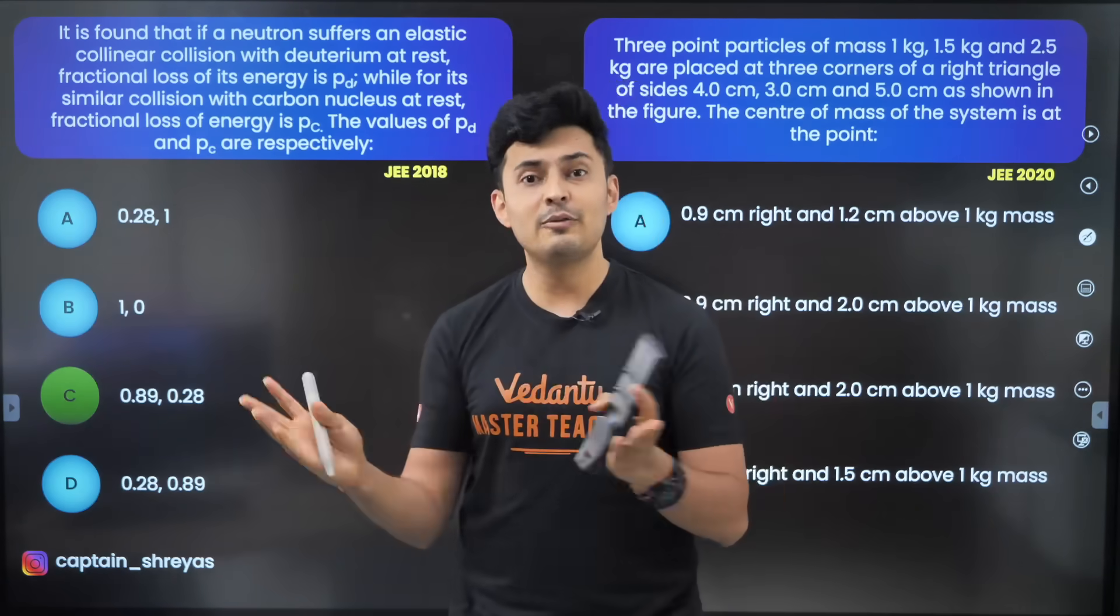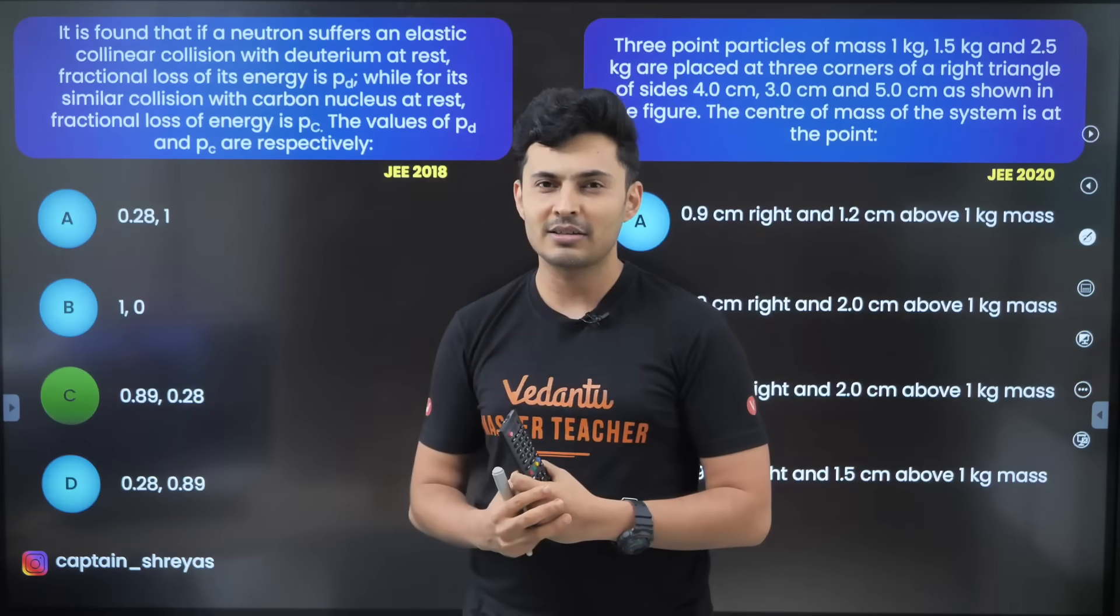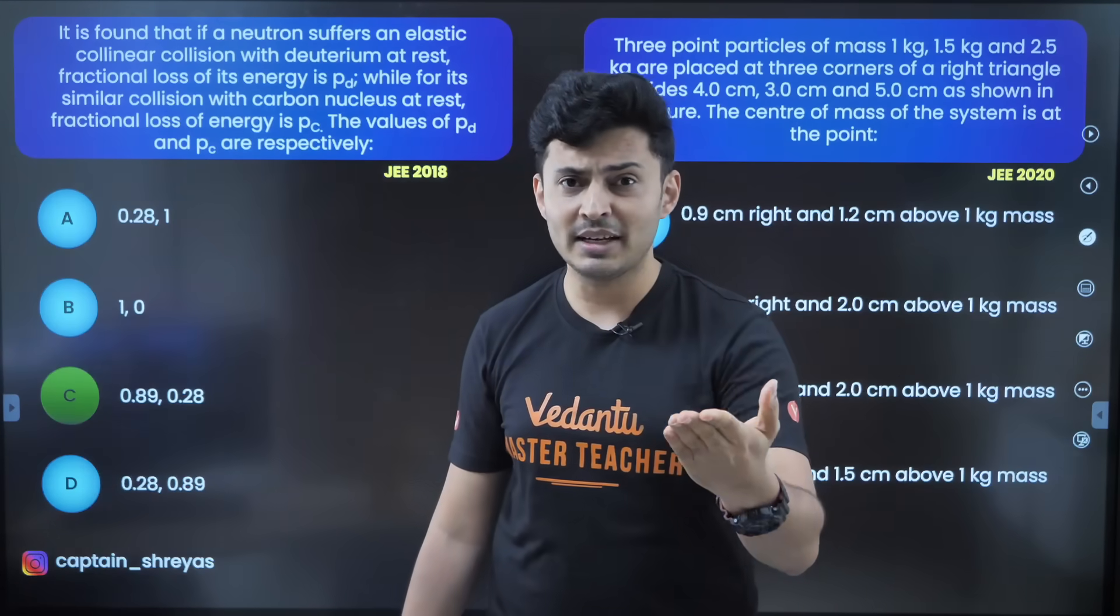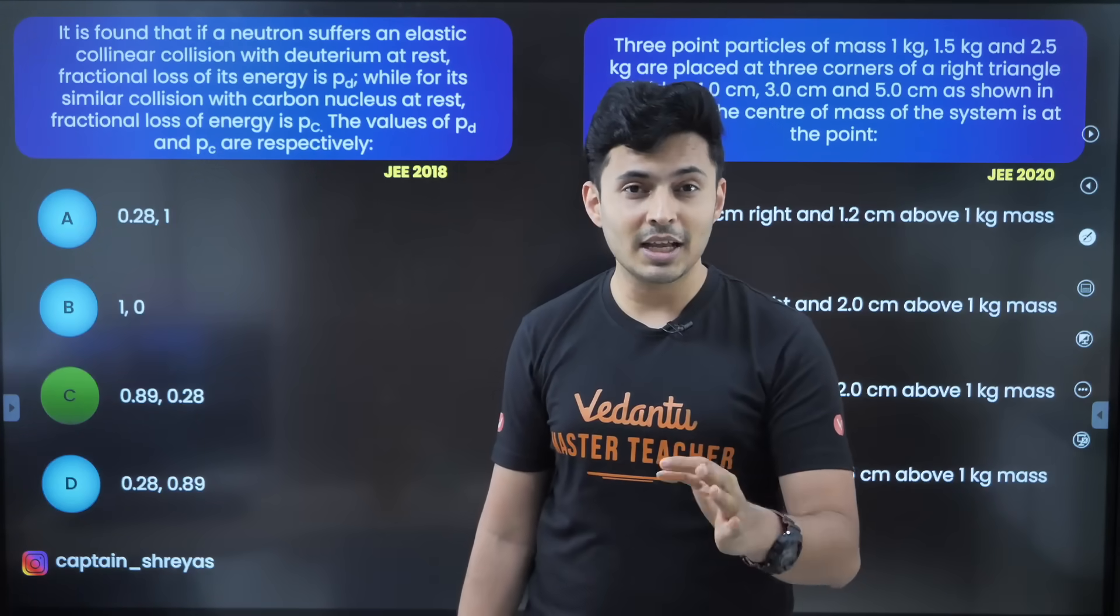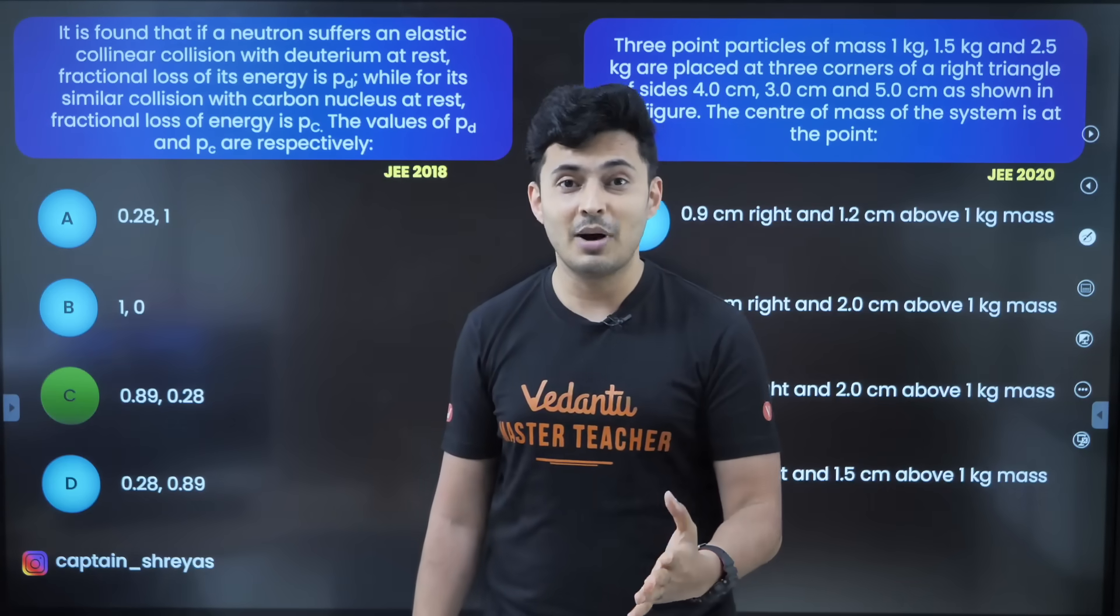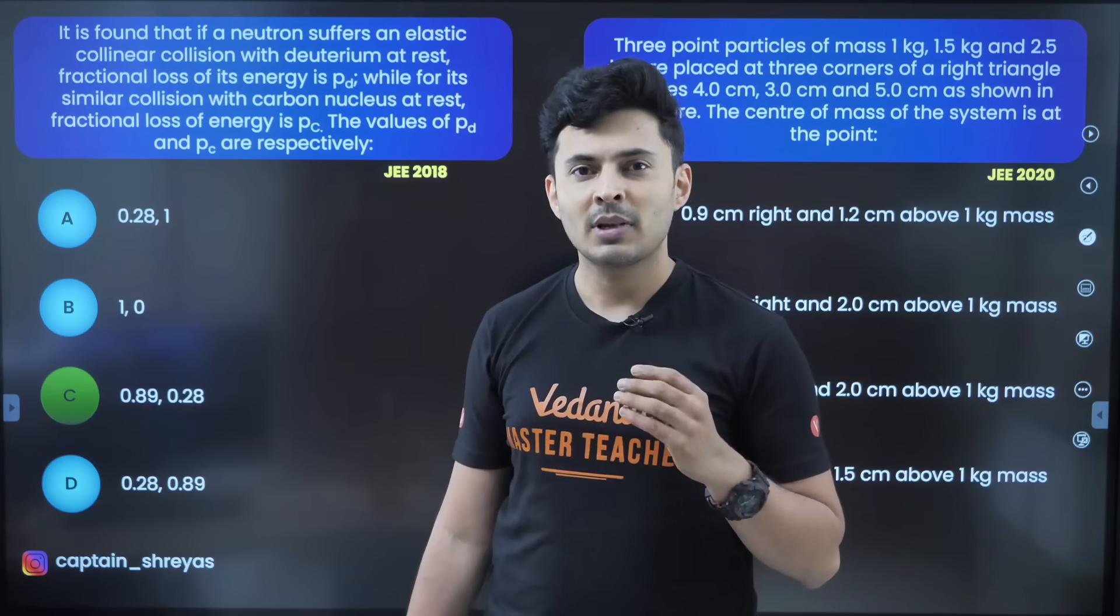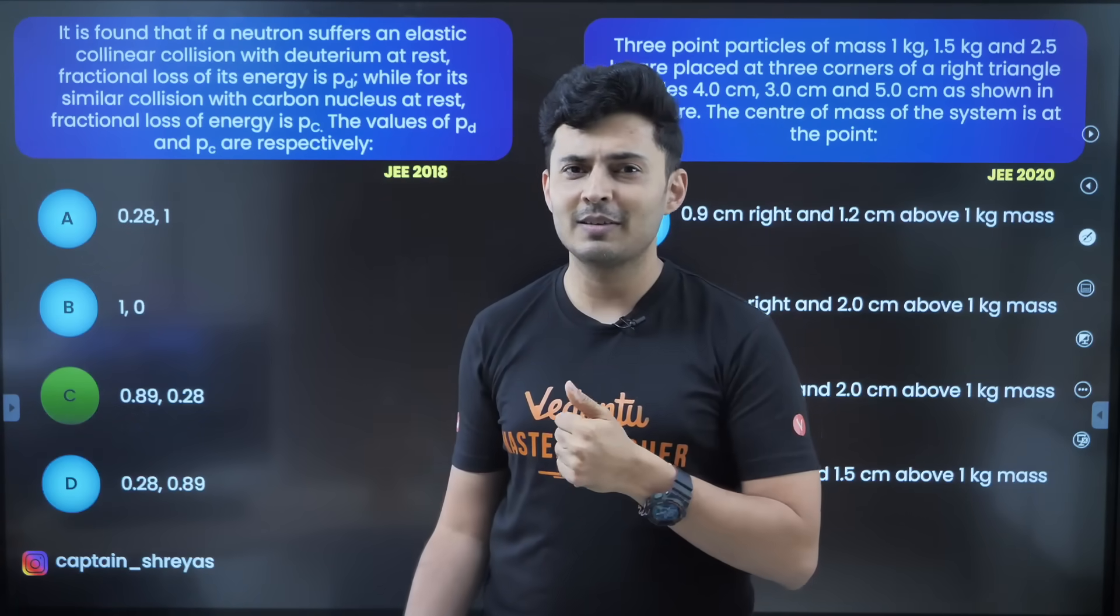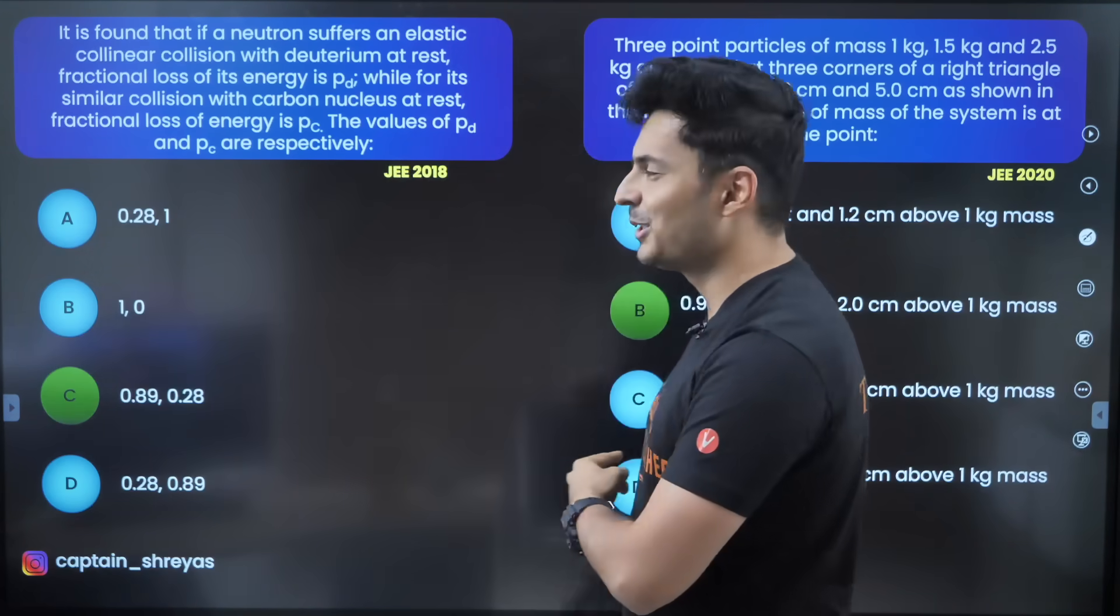Even if my two guesses are correct worst case scenario out of the four questions 2 into 4 that's eight marks and even if two options are wrong no problem minus 2 that will give me six marks at least and if I'm lucky enough then maybe one more question right so I'll get 12 minus 1 that is 11 marks. That's a crazy amount of score, and if you're loving this trick do not forget to smash the like button because trick number two is coming up on your screen now.